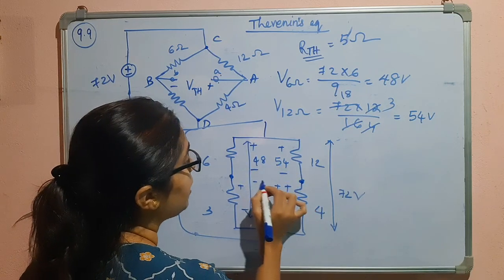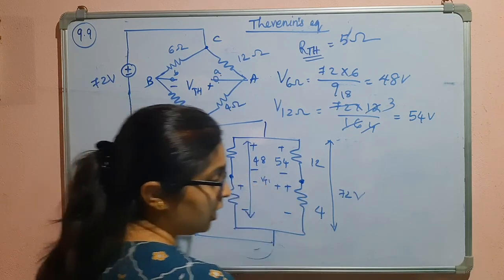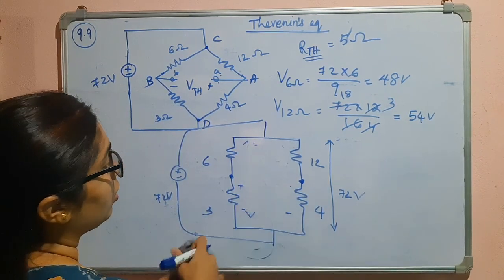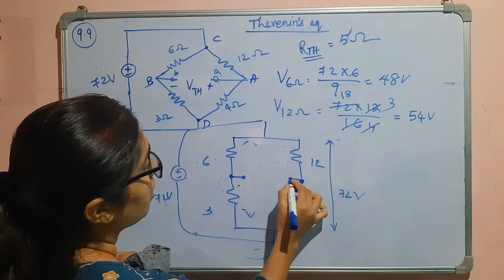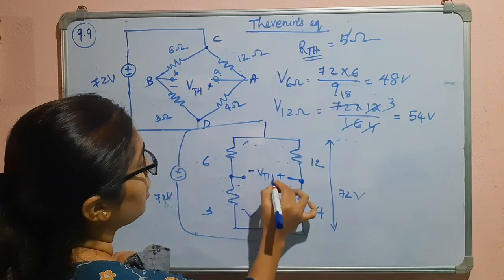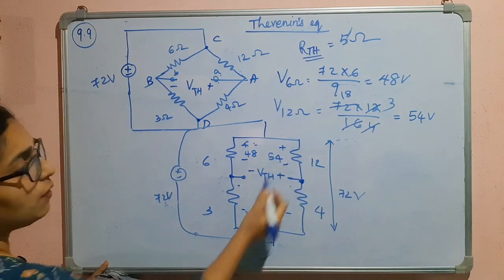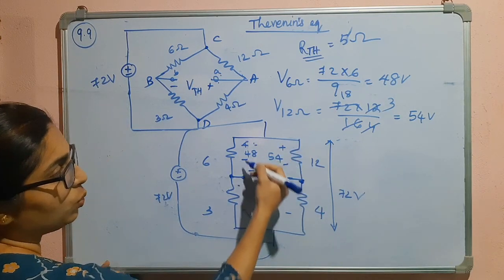Here we have plus and minus VTH. So here I will write it properly. We are going to measure this plus minus VTH. This is plus minus 48. This is plus minus 54. Now if I apply the KVL in this loop, I will come in this direction.